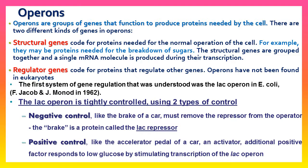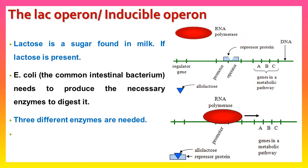The lac operon is tightly controlled using two types of control: negative control and positive control. Negative control is like the brake of a car — it requires removing the repressor from the operator. The brake is a protein called the lac repressor. Positive control is like the accelerator pedal of a car, where an additional positive factor responds to low glucose levels.